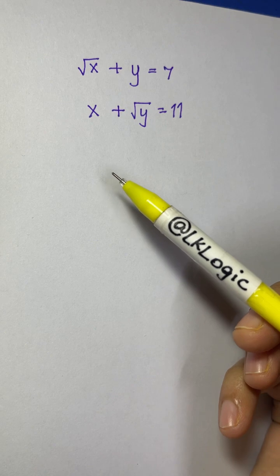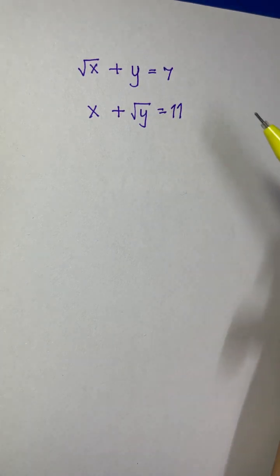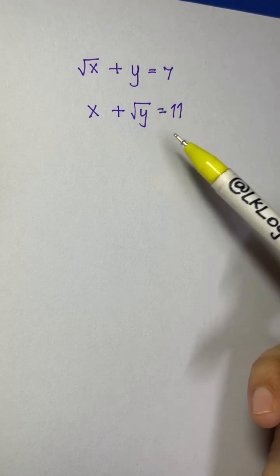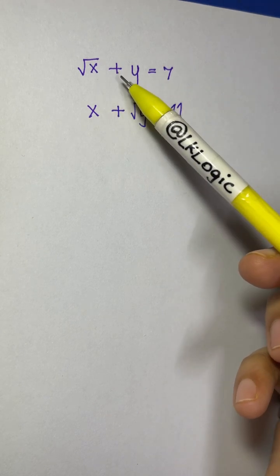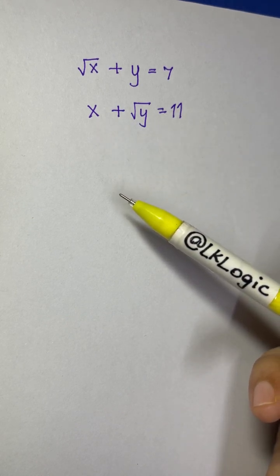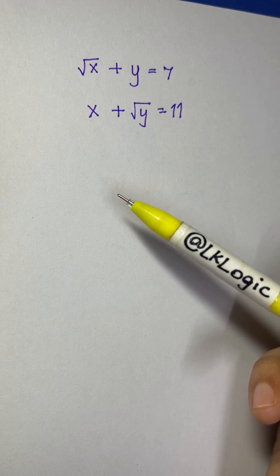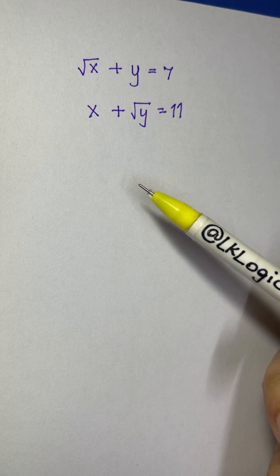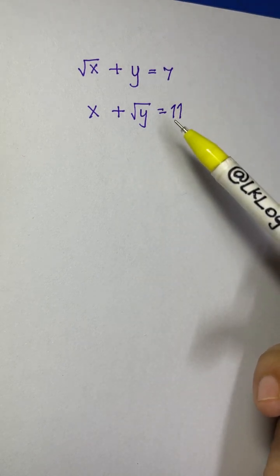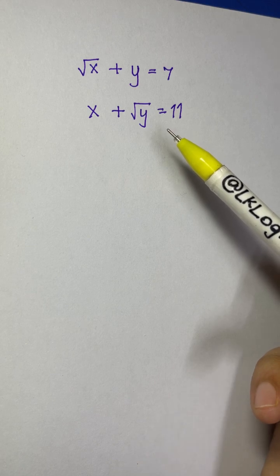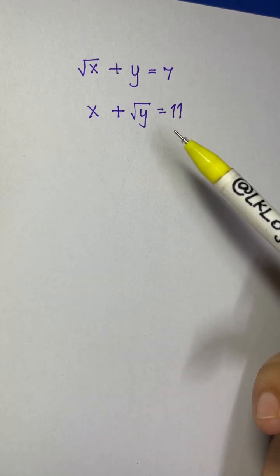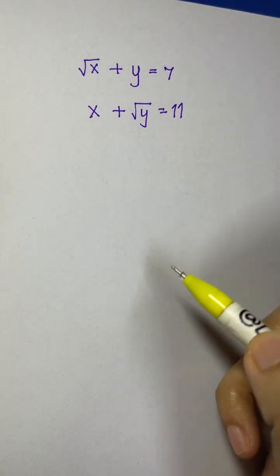Hi everyone, in this live session we're going to solve two equations posted by the Greek mathematician Ramanujan. The question says root x plus y equals 7 and x plus root y equals 11. These two equations may look tricky — you can try on your own. They look ordinary but they are quite tricky, so you cannot go with a simple algebraic method to solve them.